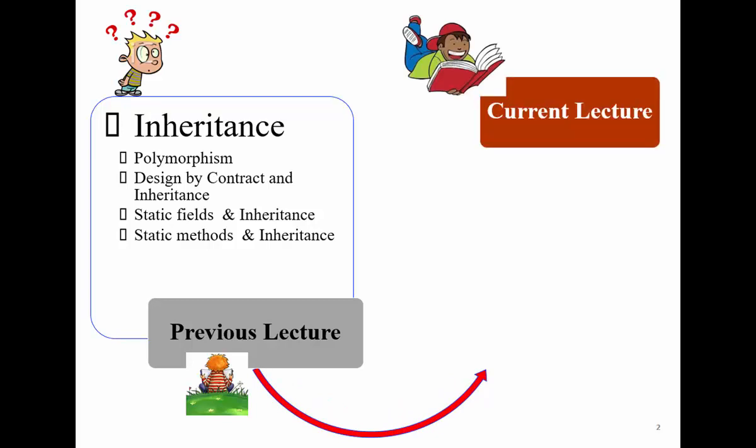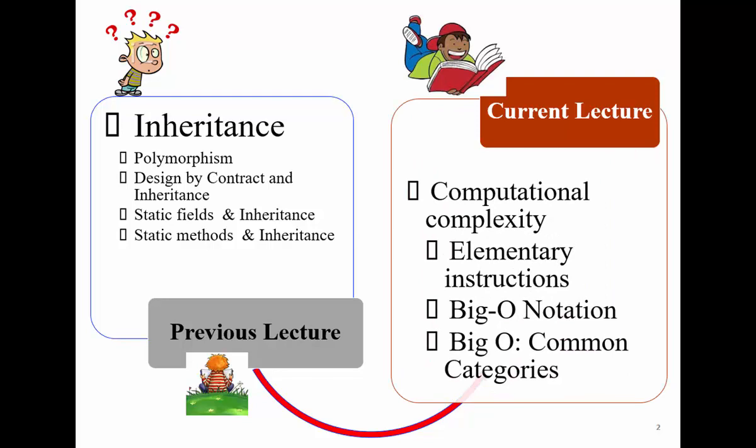Today we will discuss one of the interesting topics: computational complexity. Normally in the literature, computational complexity is discussed from two points of view — time and memory (space). Today we are going to focus on time: how many elementary instructions an algorithm needs. We will also introduce the concept of Big O notation and discuss some common Big O categories.